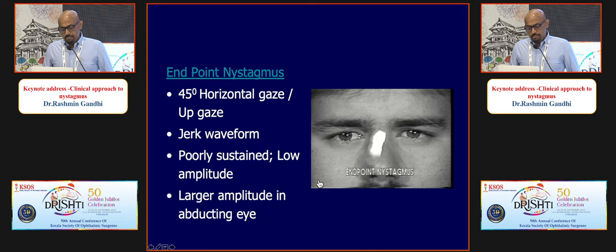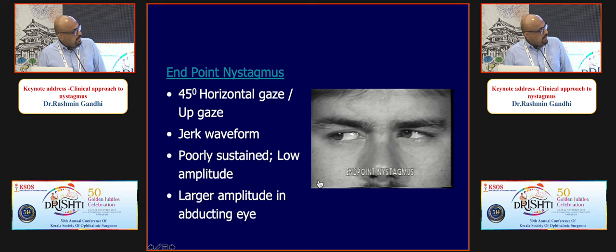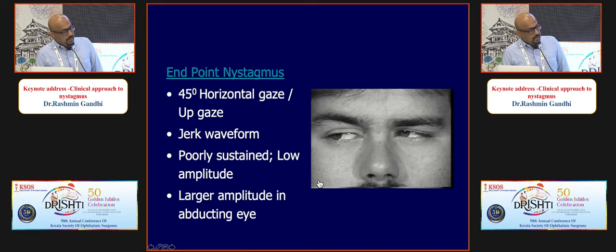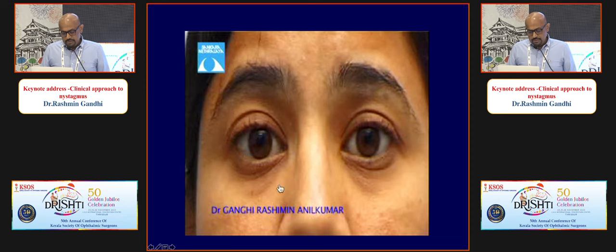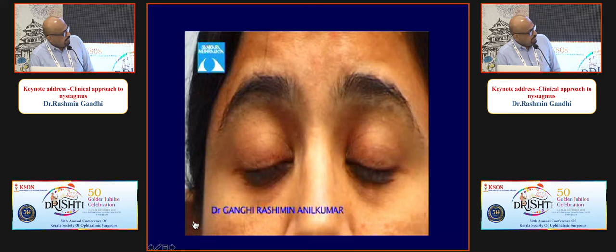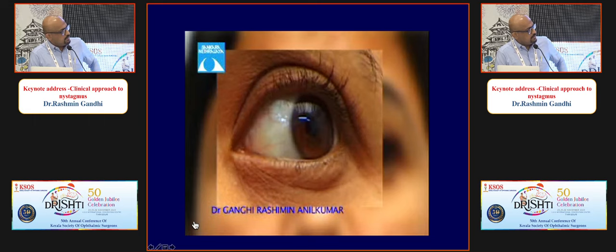If nystagmus is present in primary gaze and vertical with a downbeating fast phase — down-beat nystagmus — especially worsening on downgaze, it indicates a likely cerebellar problem and neuroimaging is mandatory. An upbeat nystagmus also has a fast phase directed upward. When a patient with upbeat nystagmus converges, the nystagmus is dampened or converts to downbeat — a classical feature of Wernicke's encephalopathy.